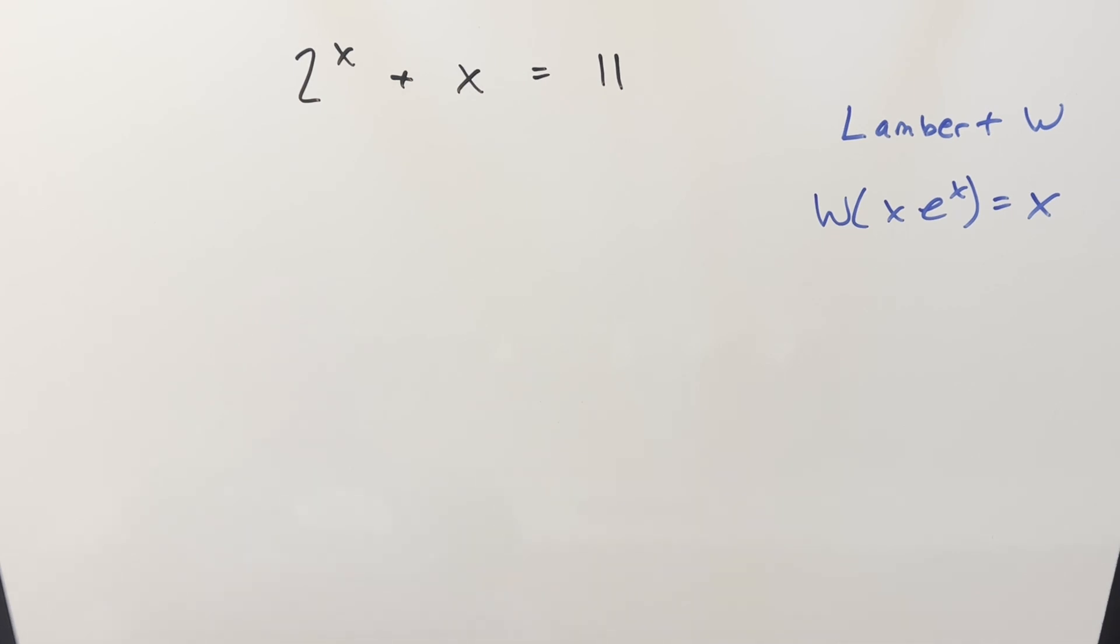Okay, we've written an exponential equation on the board. We've got 2 to the x plus x equals 11, and what I want to do on this is I want to use the Lambert W function to find all real solutions for x. One thing you might notice about this is you don't really need to use Lambert W. There's going to be some quicker, easier ways to do it. I think we'll see that later on, but for now, let's just get started with the Lambert W.